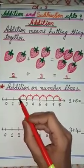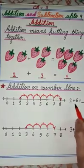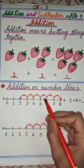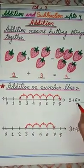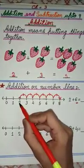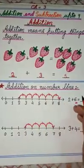So for addition we start from number 2 because we have here 2. So we will start from 2 and we will take steps forward because we have addition. For addition we take forward steps and how many steps we will take? 6 steps we will take because we have 2 plus 6. We will start from 2 and take 6 steps forward.